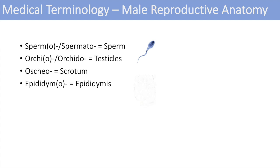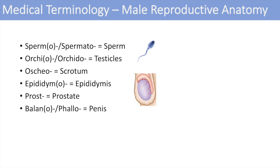The next one is epididymone, which denotes the epididymis. You can think of epididymitis, which is the inflammation of the epididymis — the epididymis is just behind the testes and is where the sperm is actually stored. The next one is prost, which just denotes the prostate — you can think of benign prostatic hyperplasia. And the last one is balanol or phalo, which denotes the penis — you can think of balanitis, an inflammation of the penis.